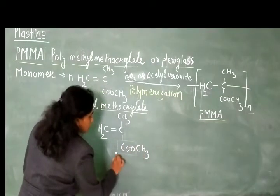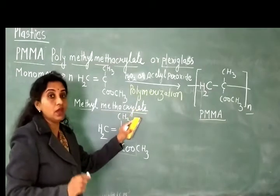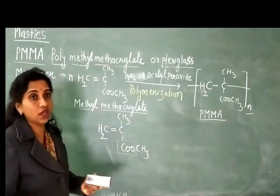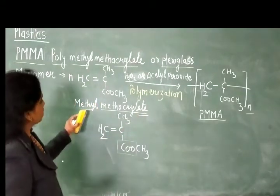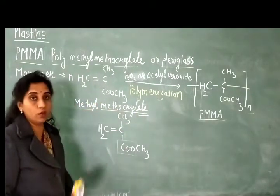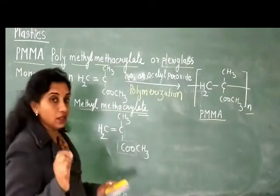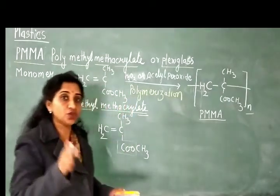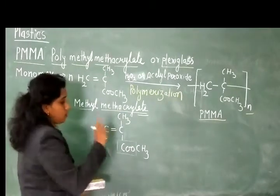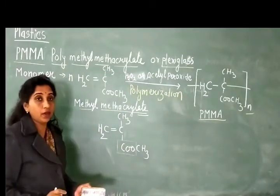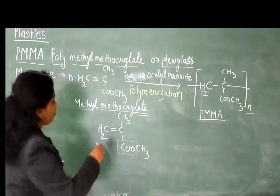This is the ester group, which is the functional group. And this is the name methyl methacrylate. From ethene, CH2 double bond CH2, one hydrogen replaced by methyl group and one hydrogen replaced by acetate group. This is methyl methacrylate structure.